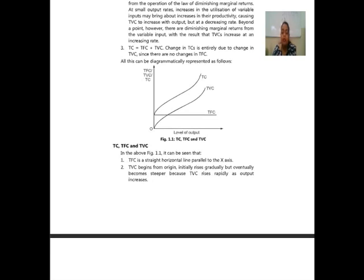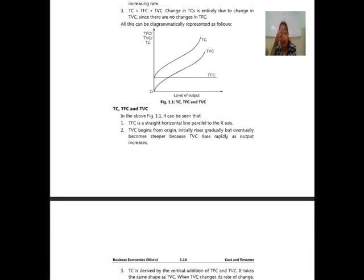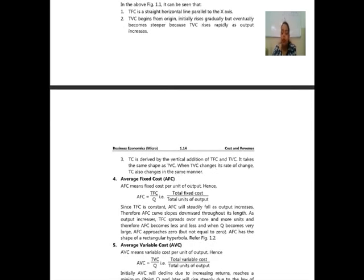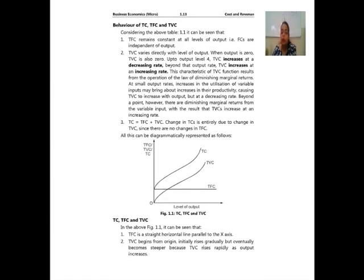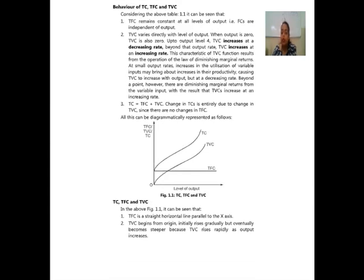In figure 1.1, TFC is a straight horizontal line parallel to the X-axis. TVC begins from the origin, initially rises gradually but eventually becomes steeper because total variable cost rises rapidly as output increases. TC is derived by the vertical addition of TFC and TVC, and takes the same shape as TVC. When TVC changes its rate of change, TC also changes in the same manner.